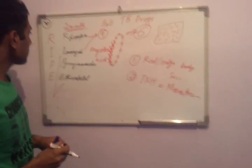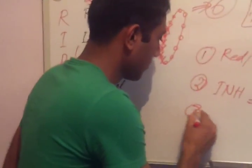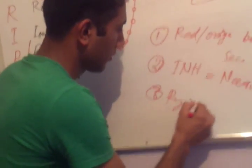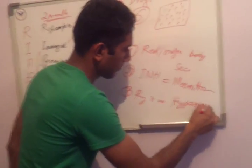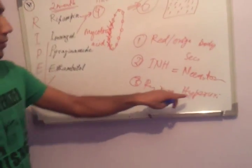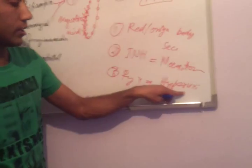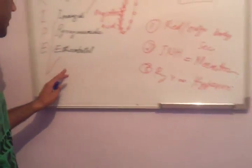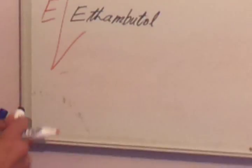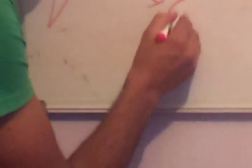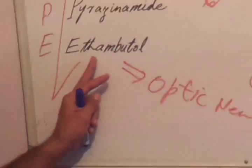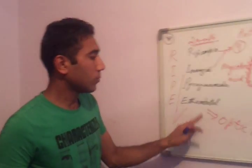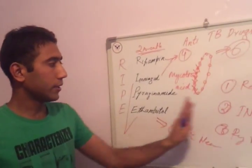The side effect of pyrazinamide is hyperuricemia — this drug increases uric acid levels in the bloodstream. The side effect of ethambutol is optic neuropathy. When this drug is used, the person may complain of red-green color blindness. These are the basic side effects of these drugs.